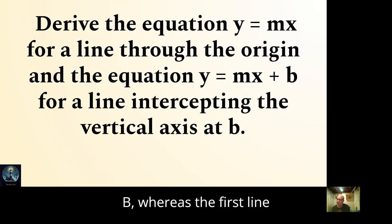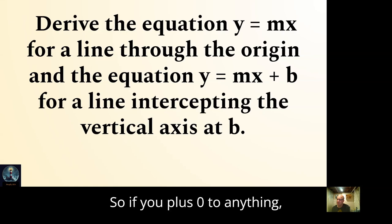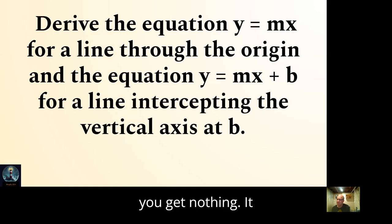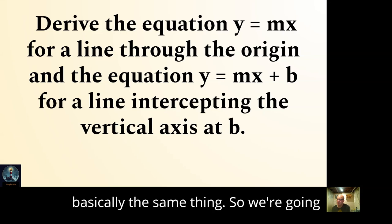The first line crosses at the origin, which is zero. Adding zero doesn't change anything, so these are essentially the same thing, and we'll go through both.